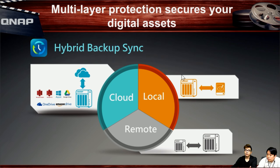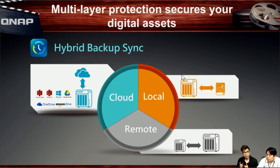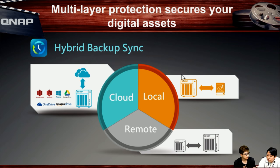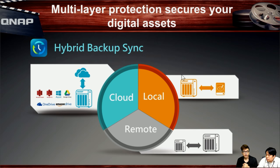If you want even more data protection, you can save data to local NAS and use the RTRR function to replicate all files to another remote NAS, or use Hybrid Data Sync to back up to Google Drive, OneDrive, Amazon Drive, or other cloud services. QNAP provides three ways to protect and secure your data files — local NAS storage, remote NAS replication, and cloud backup.